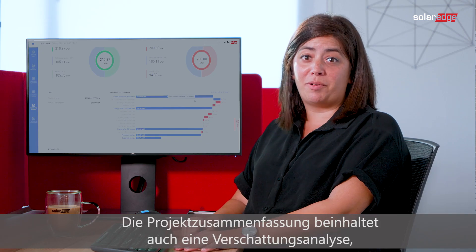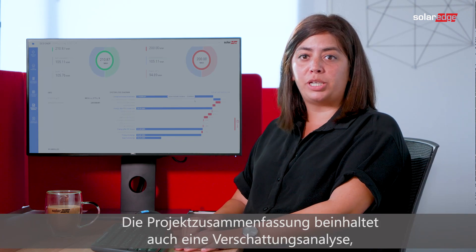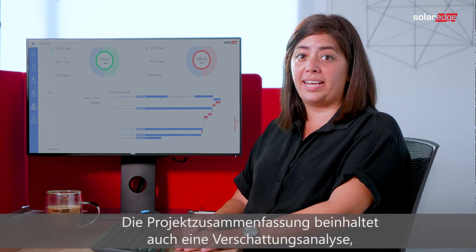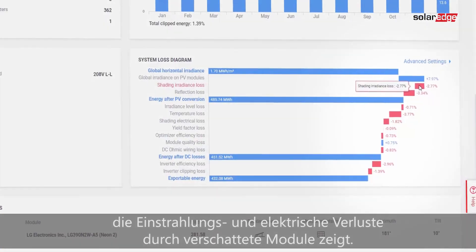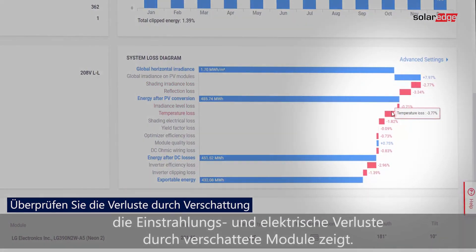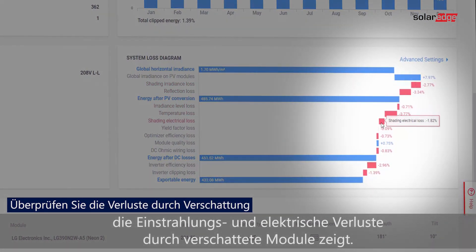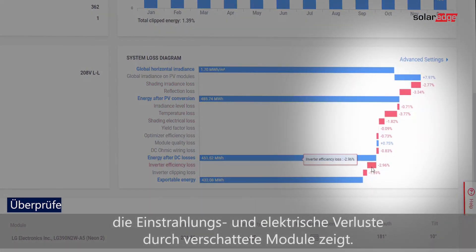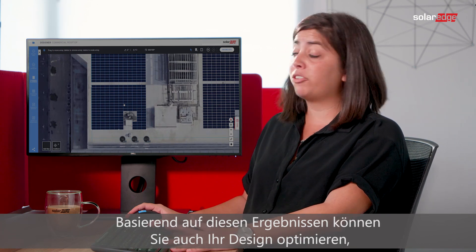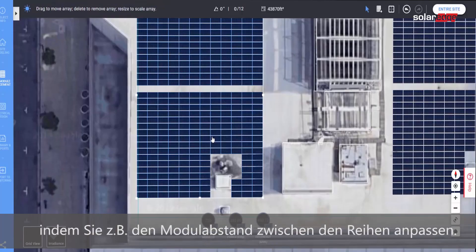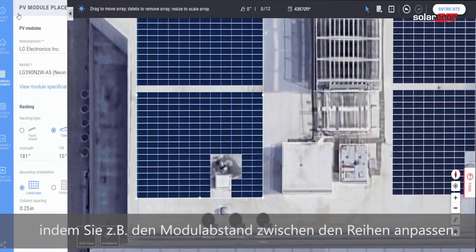The project summary also includes shading analysis, showing irradiance and electrical losses resulting from shaded modules. Based on these results, you can also optimize your design by, for example, adjusting the inter-row spacing.